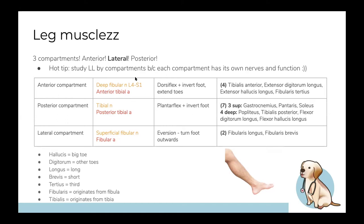The three major arteries of the leg are the anterior tibial, posterior tibial, and fibular. The fibula is the lateral bone, so the fibular artery supplies the lateral compartment. The anterior and posterior tibial arteries supply the anterior and posterior compartments respectively. There are 13 muscles of the leg in total, and the posterior compartment is the only one with two layers — superficial and deep — because the calf is much bigger.